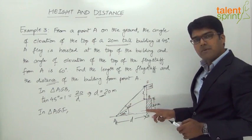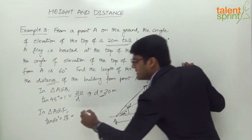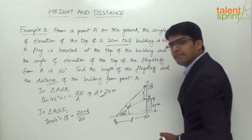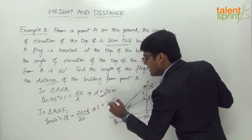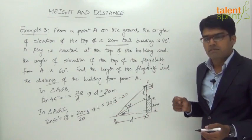Applying tan 60: tan 60 = opposite/adjacent = (20 + L)/D. Since tan 60 = √3 and D = 20, we get √3 = (20 + L)/20. Solving: L = 20√3 − 20. Based on the answer options, we can either leave it as 20√3 − 20 or simplify further.